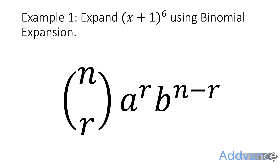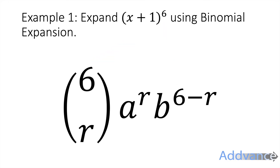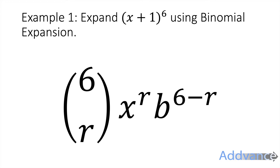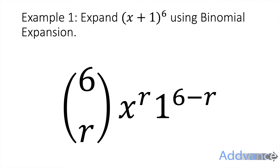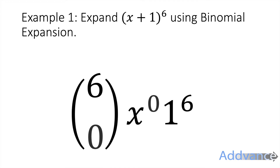As an example, let's expand (x+1) to the power 6 using the formula: n choose r, a to the power r, b to the power (n minus r). Here n = 6, a = x (the first part of the bracket), and b = 1 (the second part of the bracket).